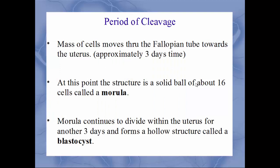As this mass of cells moves down the fallopian tube toward the uterus — this takes about three days — the structure is now a solid ball of about 16 to 32 cells called a morula. This morula will continue to divide within the uterus for another three to four days, at which point we'll form a hollow structure called a blastocyst. The morula is the first step and is a solid mass; then the morula becomes hollow as the inner part starts to fill with fluid — that's called a blastocyst.